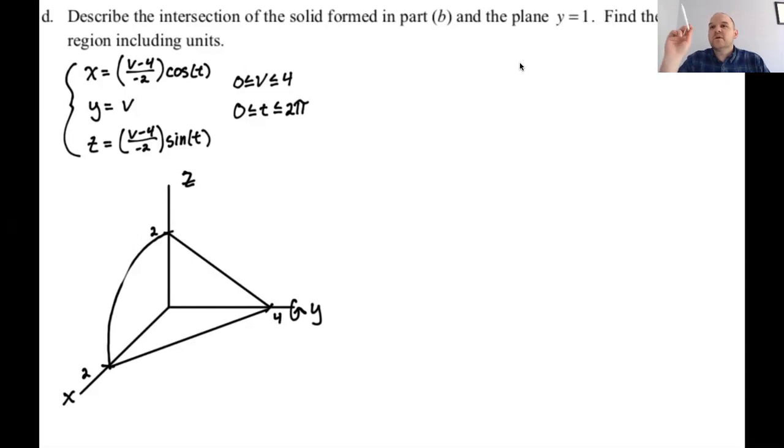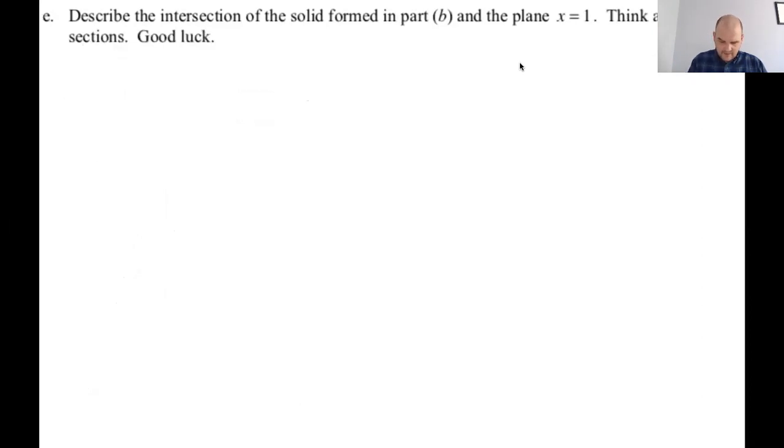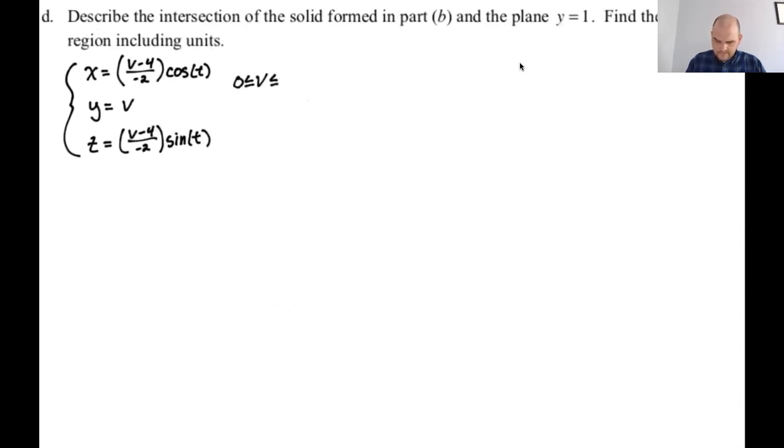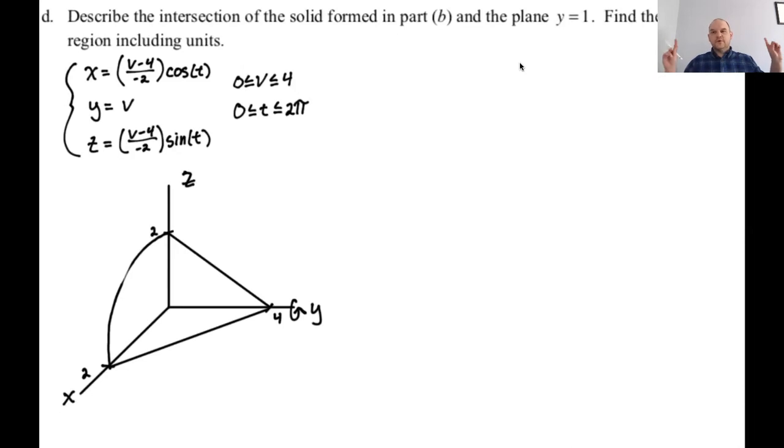So we're going to describe the intersection of a solid formed in part B and the plane Y equals one. So we want to find the area of the region, including units. Actually, if you'll bear with me for one second, I think I'm going to need this again on the next problem. So what I'm going to do right now is actually set that up just so we can use it again. We're starting now and go, right?